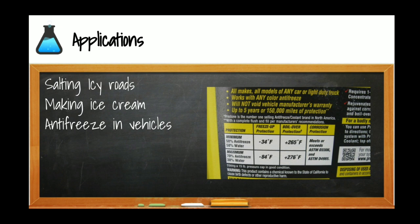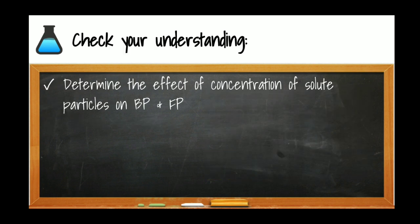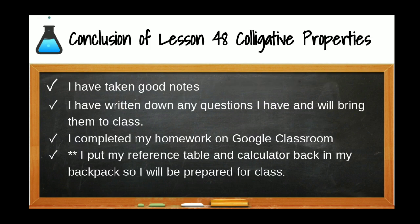We use colligative properties every day — salting icy roads, adding salt to ice when making ice cream, and adding antifreeze to vehicles so engines don't freeze in cold weather. You should now be able to determine the effect of solute concentration on boiling point and freezing point. This marks the end of lesson 48 on colligative properties. Make sure your notes are complete, bring any questions to class, and complete your homework on Google Classroom.